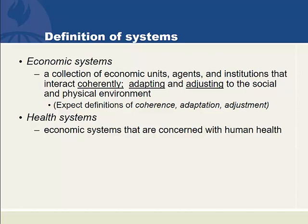So it's simple to extend that definition to define a health system as an economic system that is concerned with human health. We know that there are units and agents and institutions. We must now define these three highlights of what makes it a system. There has to be coherence, adaptation, and adjustment. What are those things?